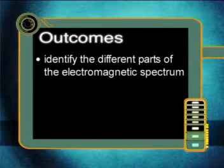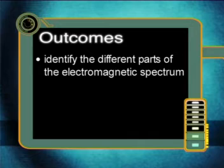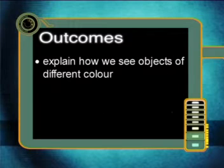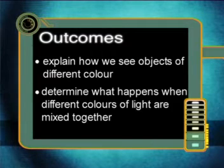In this lesson, we will examine the electromagnetic spectrum in more detail and pay special attention to the spectrum formed by different colors of visible light. By the end of this lesson, you should be able to identify the different parts of the electromagnetic spectrum, recall the spectrum of different colors of light that make up visible light, explain how we see objects of different color, and determine what happens when different colors of light are mixed together.